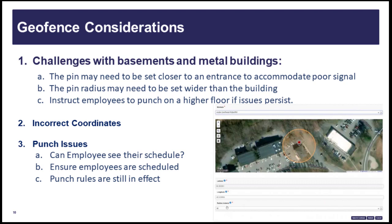Your geofence uses the cell phone GPS location and compares it against the fence location to enable or deny punches. Cell phone signals are broadcast from cell towers — the bars measure cell signal strength but do not measure GPS signal strength. GPS signals are radio signals broadcast from satellites in orbit 12,000 miles above the earth. These signals penetrate air best and get reflected off metal, so you have the best signal standing outside.